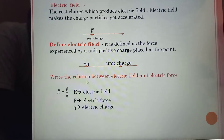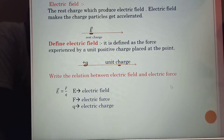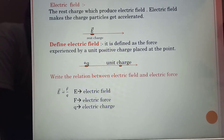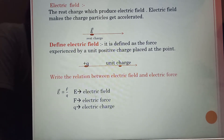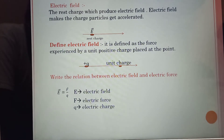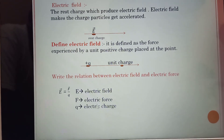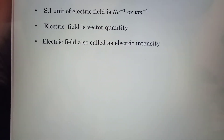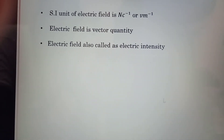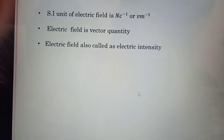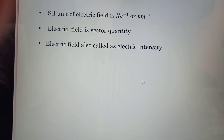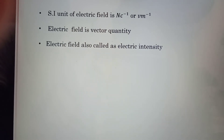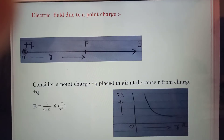The relation between electric field and electric force: E = F / Q, where E is the electric field, F is the electric force, and Q is the electric charge. Properties of electric field: the unit of electric field is newton per coulomb (N/C) or volt per meter (V/m). Electric field is a vector quantity, also called electric intensity.